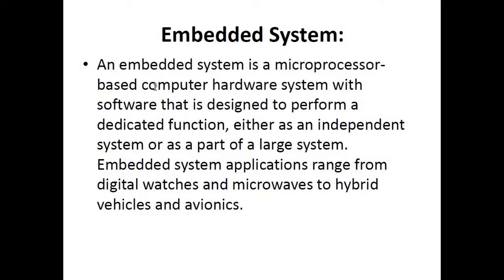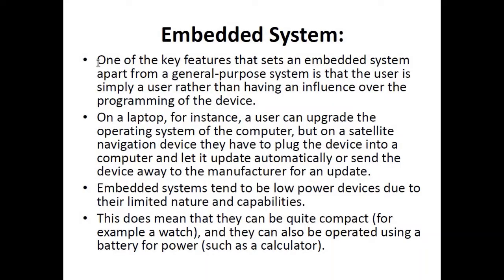Embedded system applications range from digital watches and microwaves to hybrid vehicles and avionics. An embedded system is basically a computerized system or circuit that is controlled by a microprocessor and designed to perform a specific task — for example, to control an automatic washing machine, run a digital clock, or run other electronic devices such as the autopilot of an aeroplane.